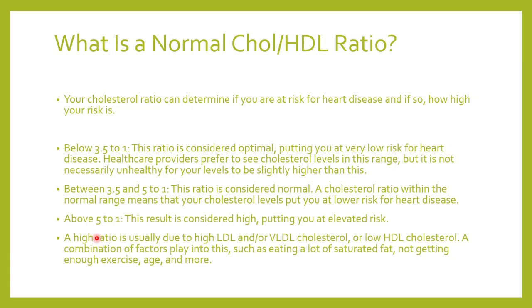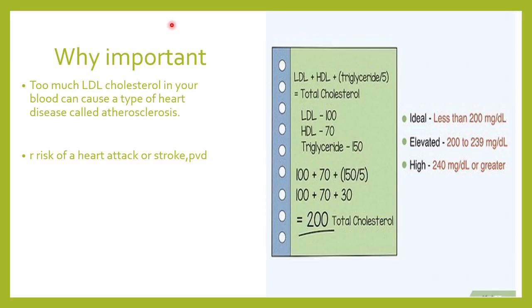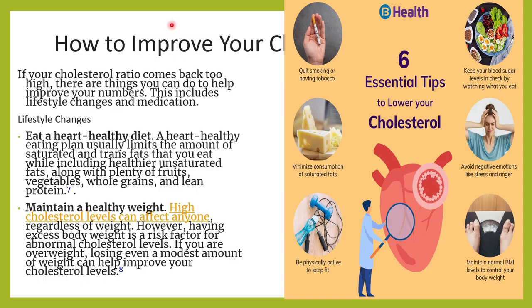Along with a high ratio, other risk factors also contribute to heart disease — eating a lot of saturated fats, not getting enough exercise, and aging. A higher cholesterol to HDL ratio indicates that HDL is low and there may be too much LDL cholesterol in the blood. Excess LDL contributes to increased total cholesterol and atherosclerosis. A very high ratio also means you are at much greater risk of heart disease, stroke, and peripheral vascular disease.